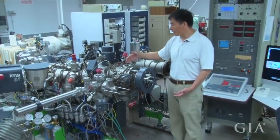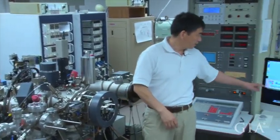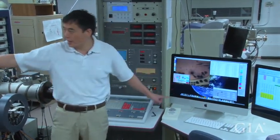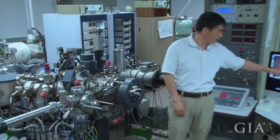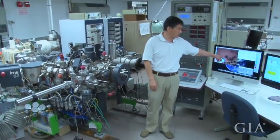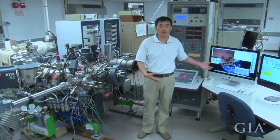Secondary ions are the ions generated after your sample gets hit. Your primary ion is the ions coming from there that's been accelerated and focused and hit on this target. The target then generates secondary ions.